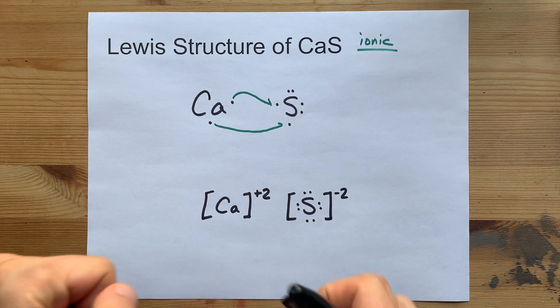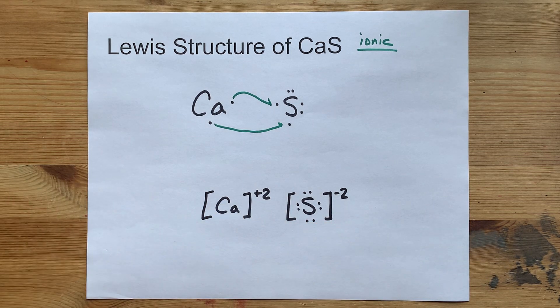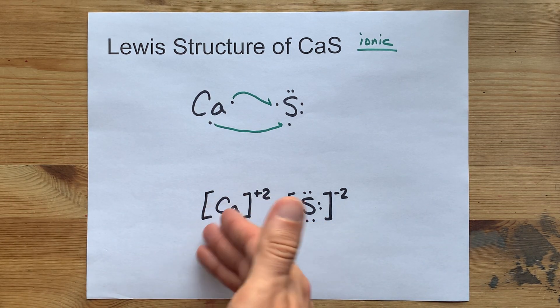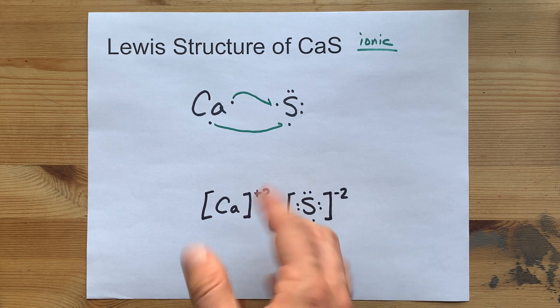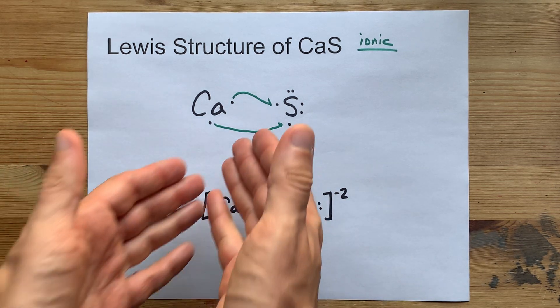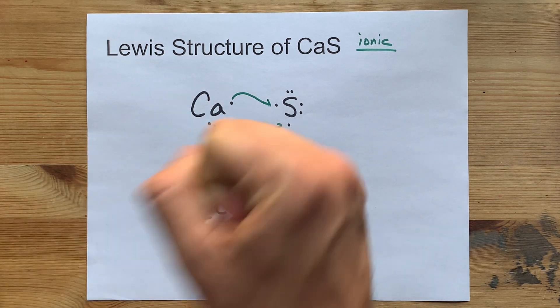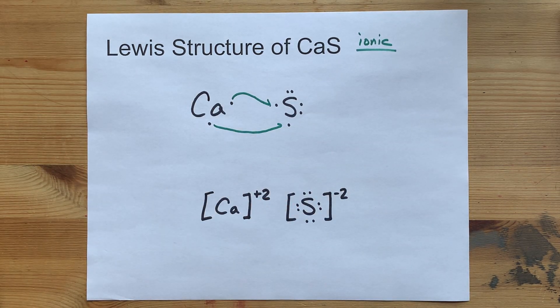This is your complete Lewis structure because we only needed one of each. The calcium gave its electrons away. Everyone's happy or satisfied. And so are you because we drew the Lewis structure together. Best of luck.